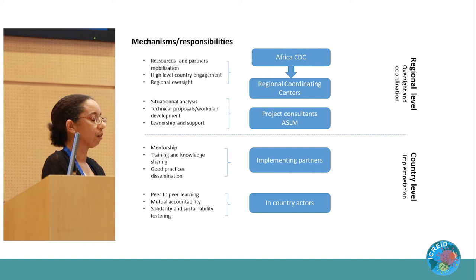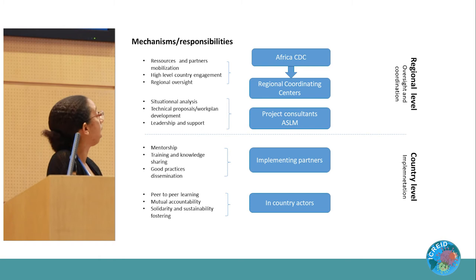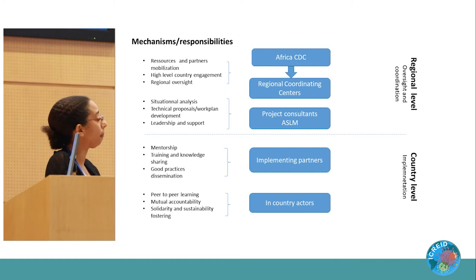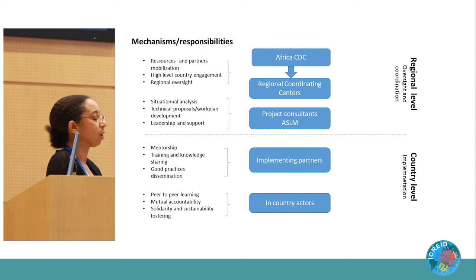The project governance structure is as follows: at the regional level, Africa CDC provides overall coordination, resource mobilization, and high-level country engagement. Project oversight and country evaluation is carried out by two project consultants with assistance from ASLM. At the country level, implementing partners — one per target country — carry out project activities together with in-country actors, relying mostly on mentorship, training, and knowledge sharing around best practices.